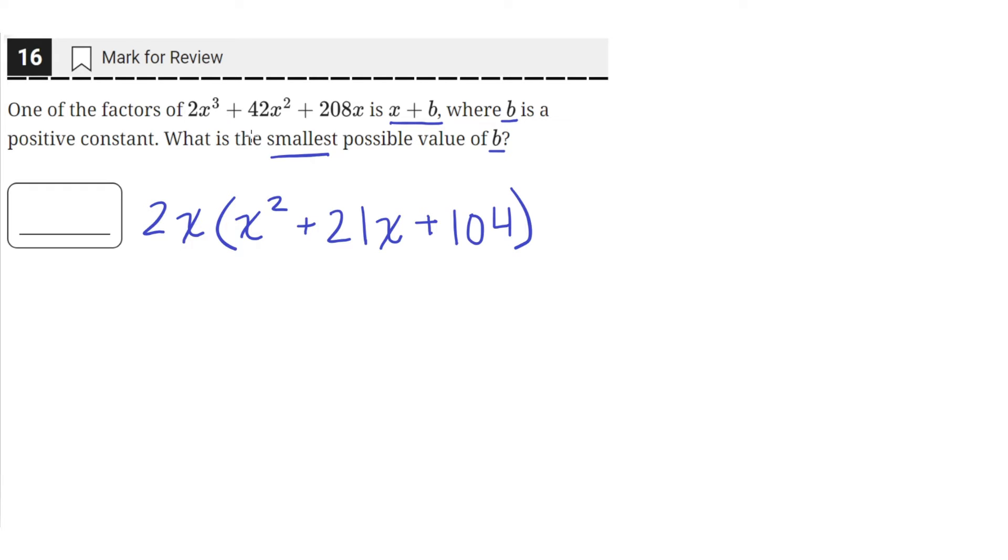This will just give back the original equation, but we factored out a 2x. Okay, so in here, this looks like a quadratic, and we can just factor this by grouping. So we'll just factor this alone.